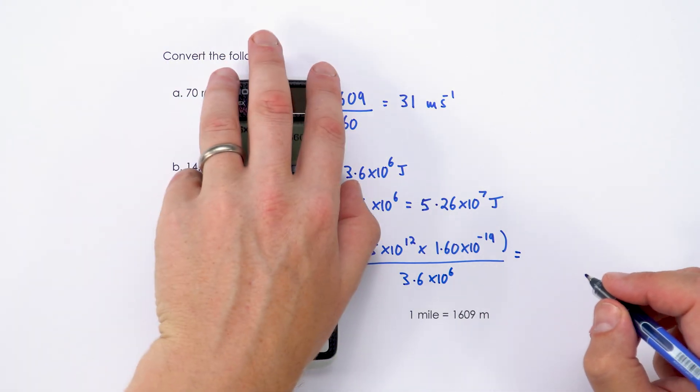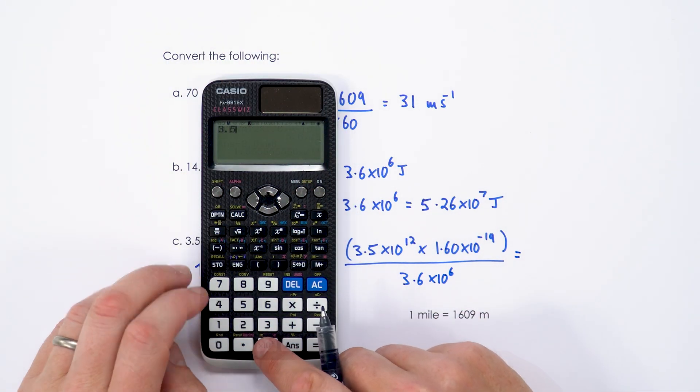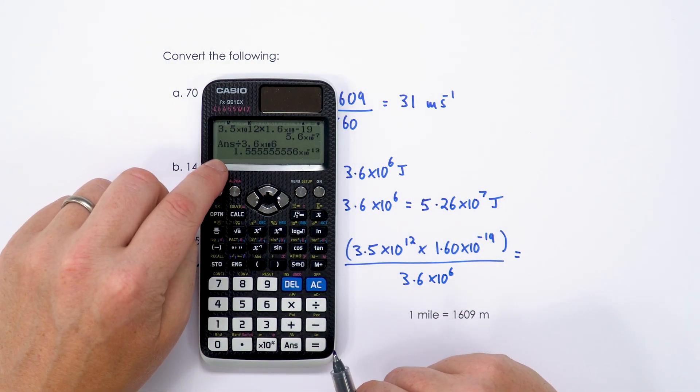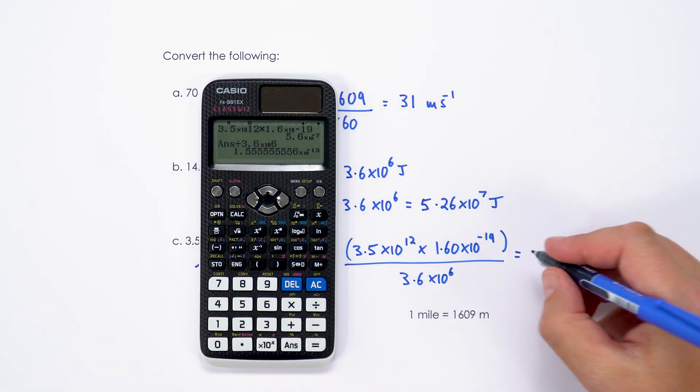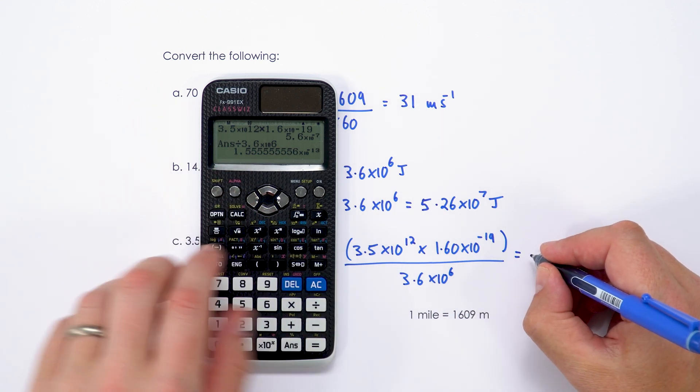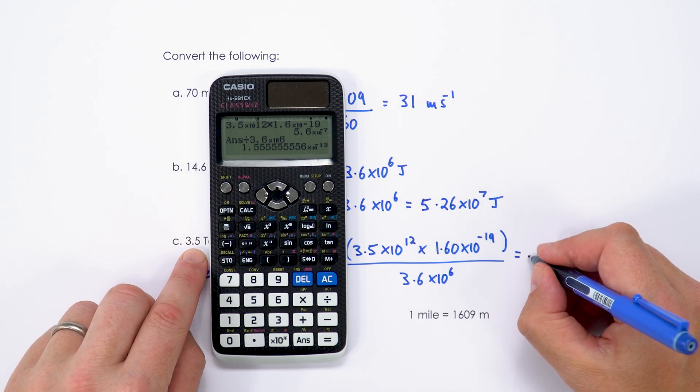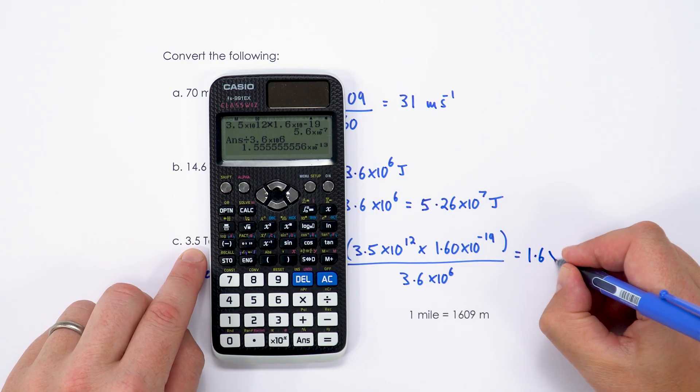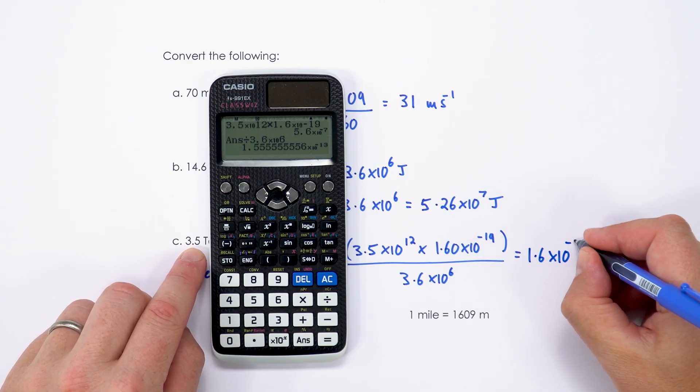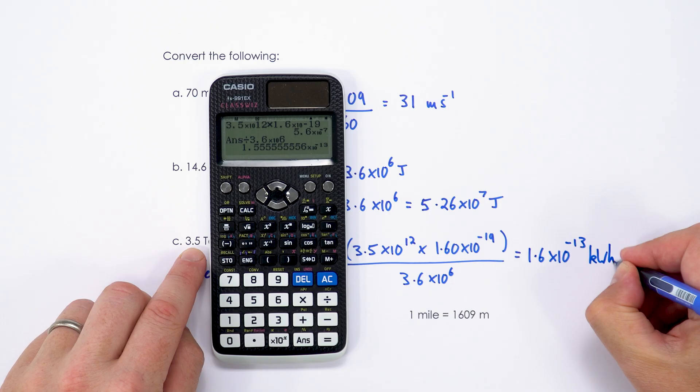And if we put that into the calculator we get an incredibly small number, 1.555. So that's going to be, to two significant figures like our raw data, 1.6 times 10 to the minus 13 kilowatt hours.